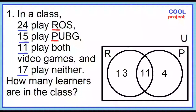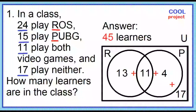17 play neither. Place 17 outside circles R and P, but inside the rectangle. Add the total number of elements of the universal set: 13 plus 11 plus 4 plus 17. The answer is 45 learners.